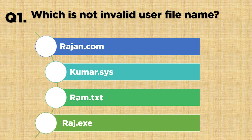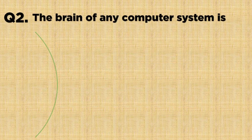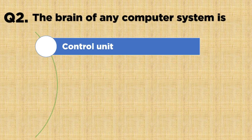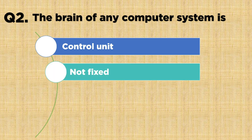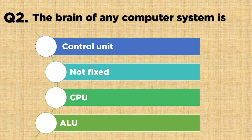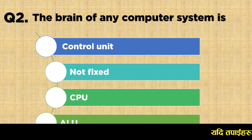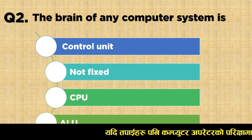Question number two: the brain of any computer system is — Option A: Control Unit, Option B: not fixed, Option C: CPU, Option D: ALU. The correct answer is Option C: CPU.